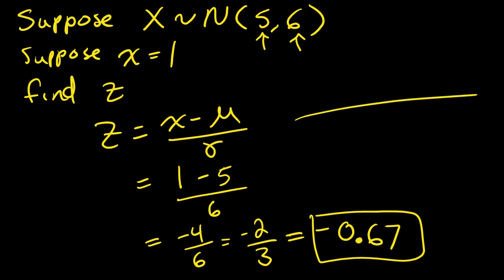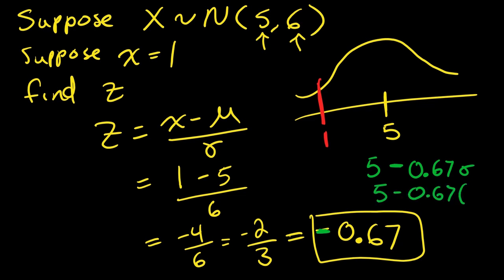What does it mean? If I were to draw my distribution, here I have 5. My observation was 1. Notice that if I were to take 5 and subtract - because this is a negative z-score - 0.67 times my standard deviation. In other words, 5 minus 0.67 times 6.